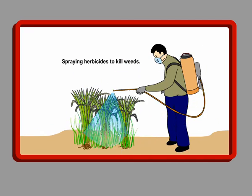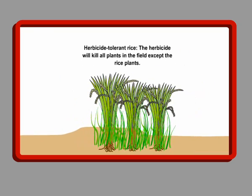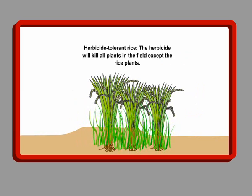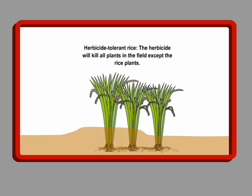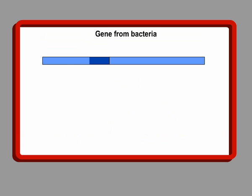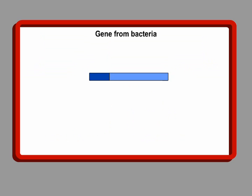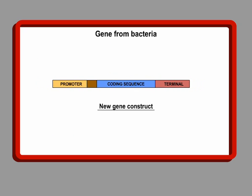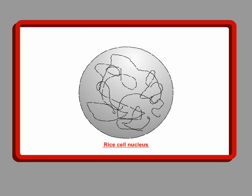Imagine a big pesticide company wants to make a rice plant tolerant to one of its herbicides, or weed killers, so that the herbicide kills all other plants in the field except the rice plant. We look for an organism tolerant to this herbicide and isolate the tolerance gene — often found in bacteria. We take out this gene in a laboratory and use its coding sequence to make a new gene construct, which can then be used in a plant. We then force this new gene construct into a rice plant cell nucleus. This process is called transformation.